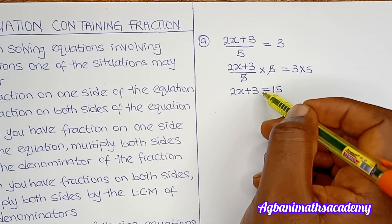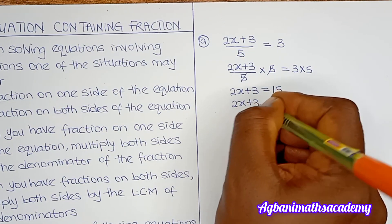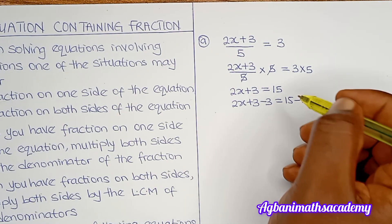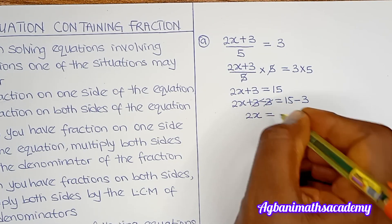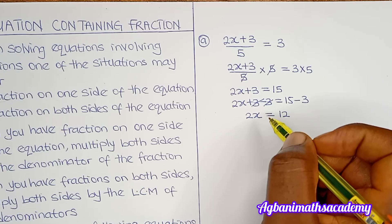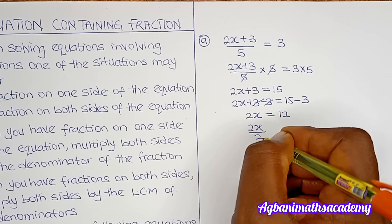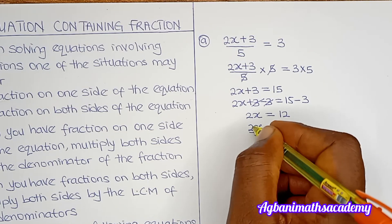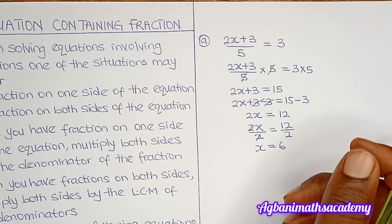Next, we subtract 3 from both sides: 2x + 3 − 3 = 15 − 3, giving us 2x = 12. To eliminate the 2, we divide both sides by 2: 2x / 2 = 12 / 2. The 2s cancel on the left, giving us x = 6. That is our answer.